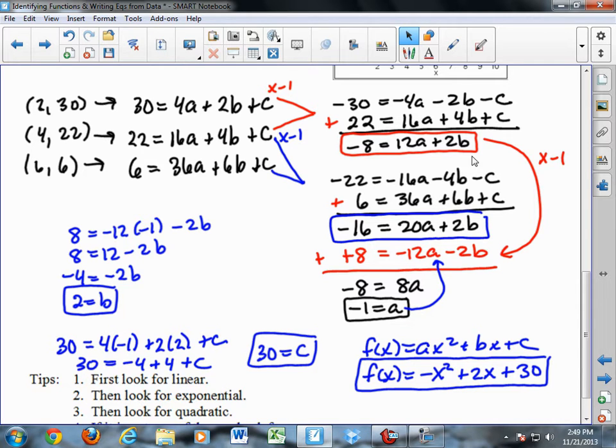Now I'm going to take these two equations, the one in the red box and the one in the blue box, and combine them together. So I'm going to take the one in the red box, multiply everything in it by negative 1, so both sides of the equation, by negative 1, which gives me positive 8 equals negative 12a minus 2b. Add that to the equation in the blue box and that gets rid of the b's. Now I have negative 8 equals 8a or negative 1 equals a.